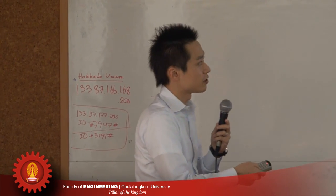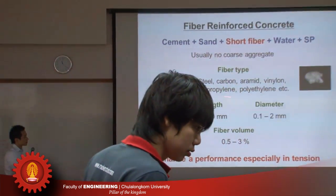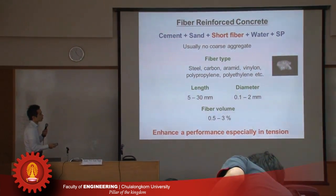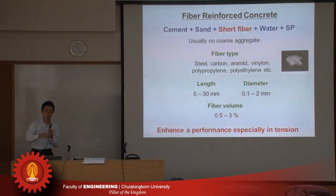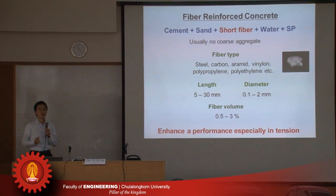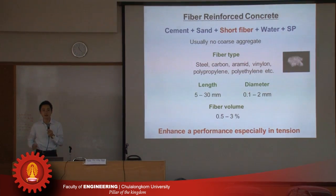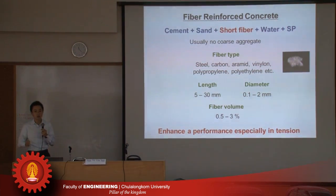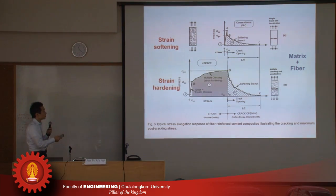Several types of fiber — steel, carbon, polyvinyl, or polypropylene and so on — with lengths of 5 to 30 millimeters and diameter 0.1 to 2 millimeters. These very short, thin fibers are put into concrete or cementitious material to enhance the tensile performance of concrete. Concrete is very good in compression but weak in tension, and these fibers enhance the performance in tension.